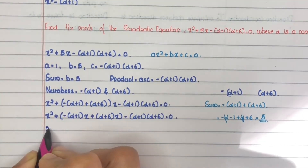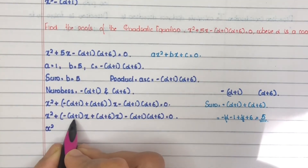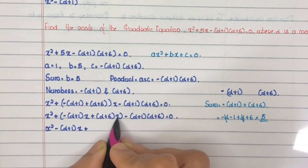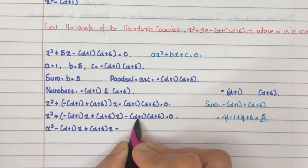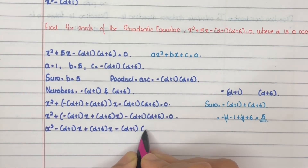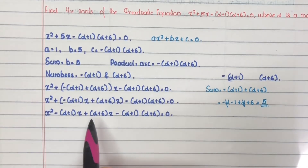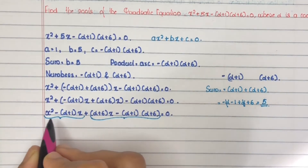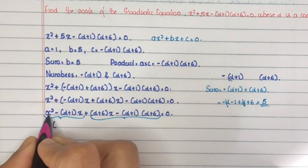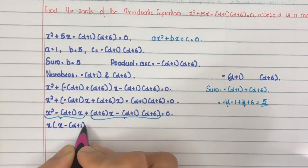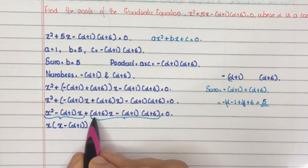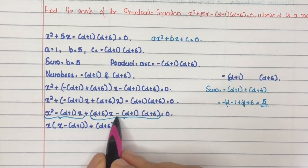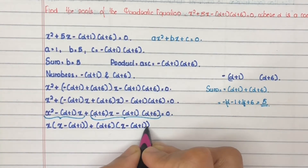Now open the bracket: x squared minus (alpha plus 1)x plus (alpha plus 6)x minus (alpha plus 1)(alpha plus 6) equals 0. Group and take common terms. In the first two terms, x is common: x times (x minus (alpha plus 1)). In the next two terms, (alpha plus 6) is common: (alpha plus 6) times (x minus (alpha plus 1)).